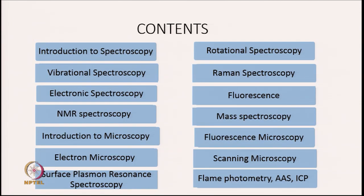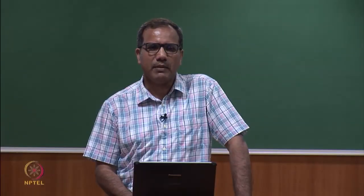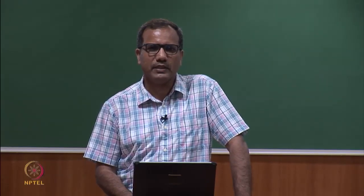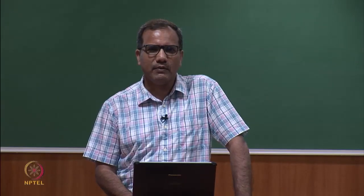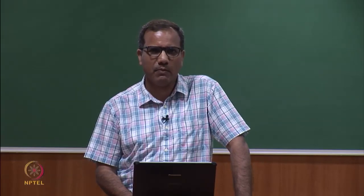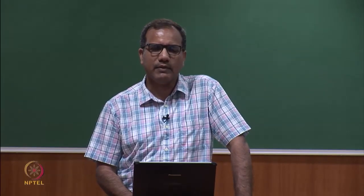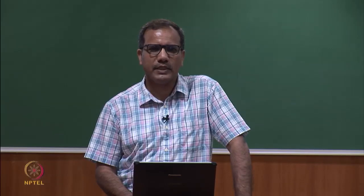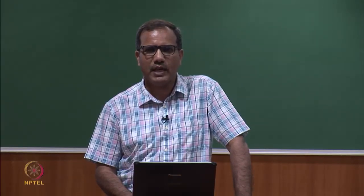We will start with an introduction to spectroscopy. We will talk about interaction of electromagnetic radiation with different materials, and then we will go to different kinds of spectroscopy: vibrational spectroscopy, rotational spectroscopy, Raman spectroscopy, electronic spectroscopy, fluorescence, NMR spectroscopy, and mass spectroscopy. We will also discuss microscopy — basics of microscopy — and then fluorescence microscopy, electron microscopy, and scanning microscopy, as well as surface plasmon resonance spectroscopy and flame photometry.